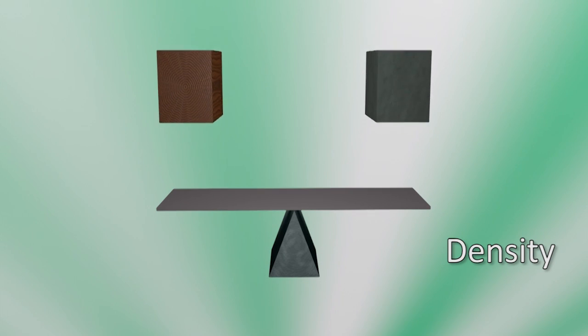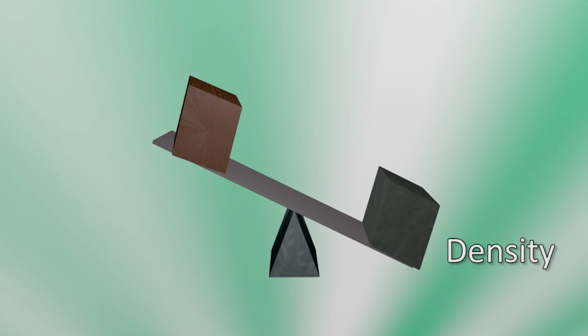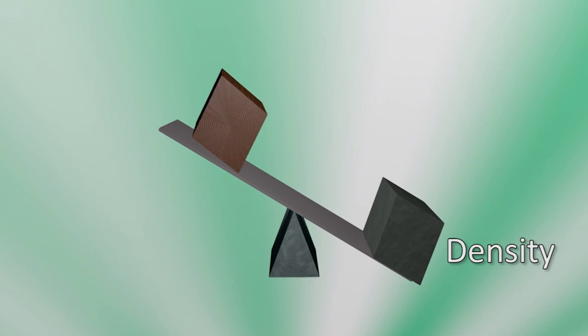Density is the reason that some solid materials, although of the same size and volume, can have a completely different mass.